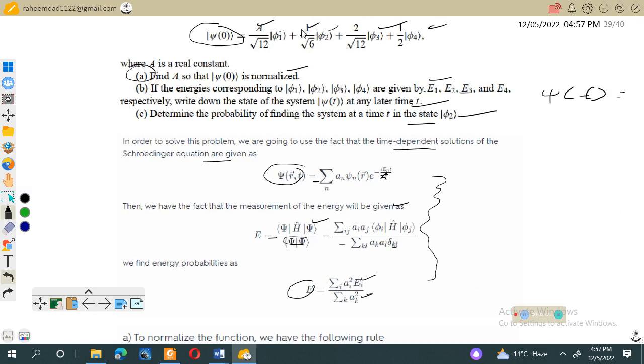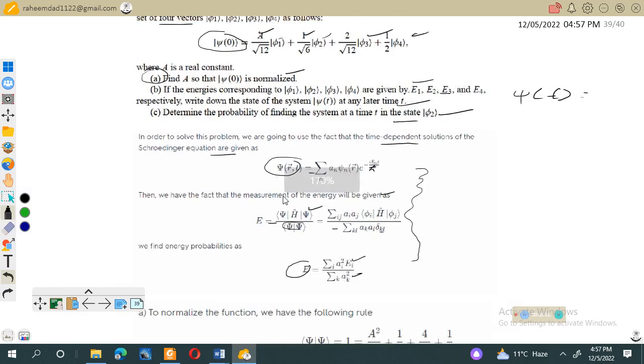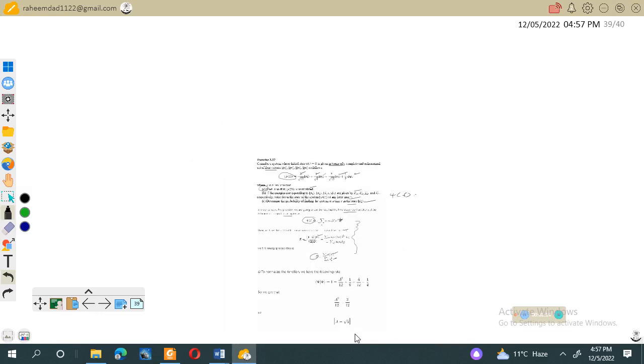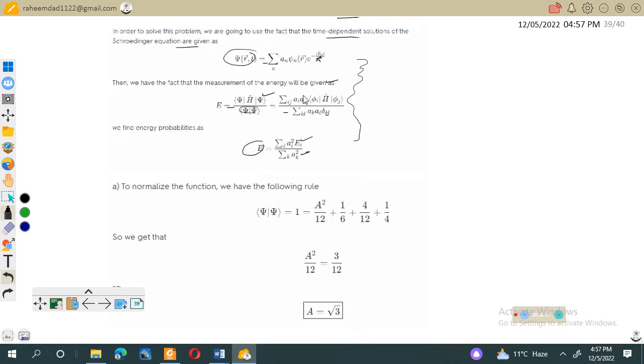The first is the normalization constant, so that ψ(0) is normalized. We are given ψ. If we take its complex conjugate and multiply with ψ, it should give equal to one. So ⟨ψ|ψ⟩ will give us equal to one. We have these two values: ψ and ψ complex conjugate will give 1 = a²/12 + 1/6 + 4/12 + 1/4.